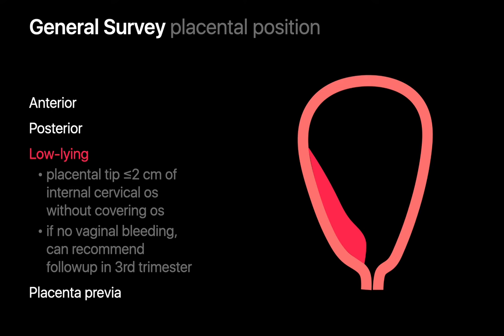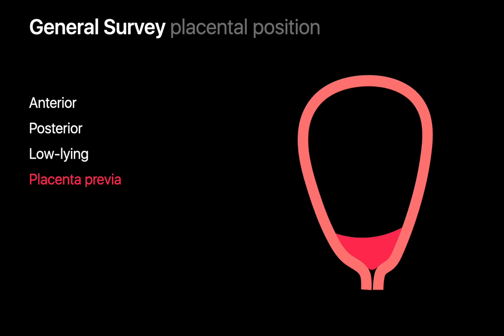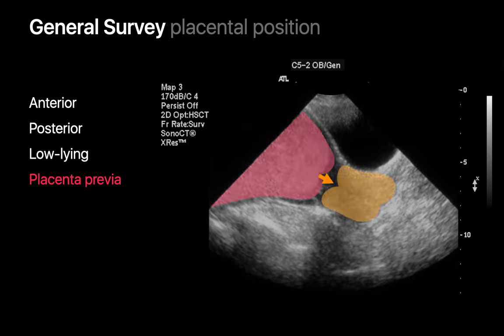In women with a low-lying placenta but without vaginal bleeding, we'll often consider doing a follow-up ultrasound during the third trimester. In this example, the placenta is posterior and its inferior tip is situated only a centimeter from the internal cervical os. Sometimes the placenta may cover the internal cervical os — this is placenta previa, as seen in this pregnancy.